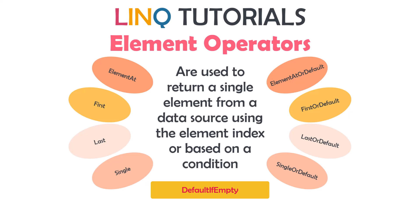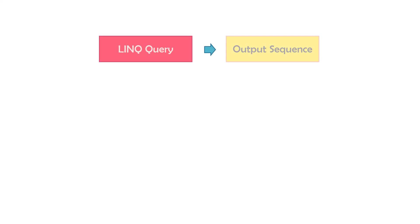Before I start explaining the operators, let me first show you one important point which you have to know about LINQ, so that you can understand why we use element operators. A LINQ query returns normally a sequence of results, or also nothing — it depends on the query and the conditions. Sometimes we don't need to get all elements, but only one specific element. To get it we can use element operators.